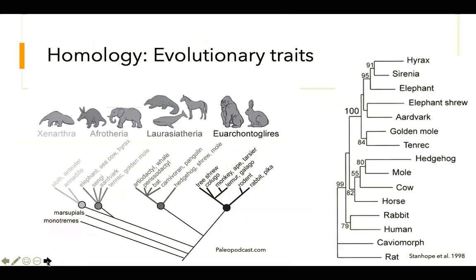These traits can be used to construct evolutionary trees. Here are examples of two types of trees, both for mammals — a block tree and an angle tree. These mammals are grouped based on shared traits. For example, monotremes are the outgroup, the only mammals that lay eggs — think platypuses. Then you have marsupials such as koalas, kangaroos, and wombats, which produce live births but very small young that migrate into a pouch. The rest are placental mammals that all give live births, and each one is more closely related to others in its group.